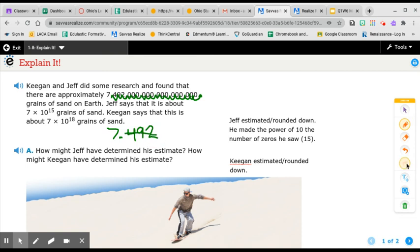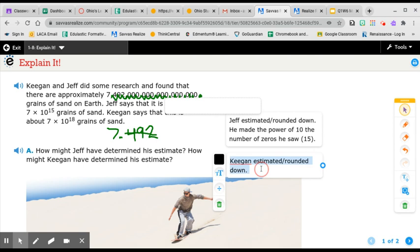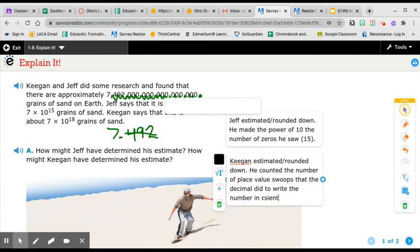So Keegan estimated, rounded down, and he counted the number of place value swoops that the decimal did to write the number in scientific notation.